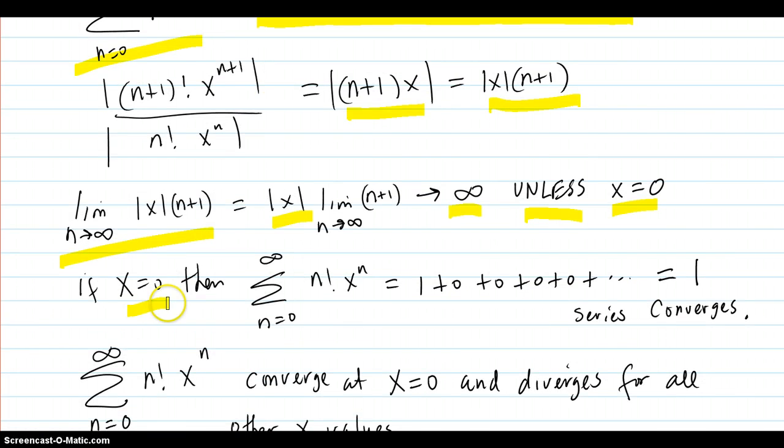If x equals zero, then what you get out of this series is one plus zero plus zero, zero, zero. And that adds up to one, so the series converges in that case, and x equals zero.